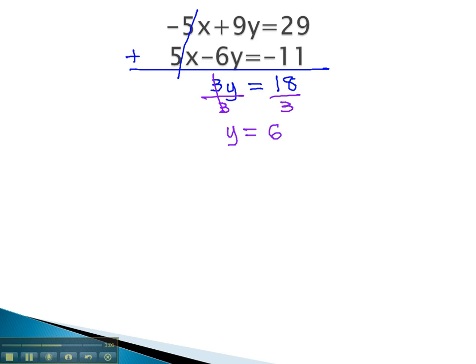We still must find the x that makes the system true as well. And again, we find that by taking our y value and plugging it into the original equation. It does not matter which equation, so I will plug it into the second, because it has smaller numbers and may be easier to work with. We can replace the y with 6, and we find the equation is now 5x minus 6y, which we just found out was 6, equals negative 11.